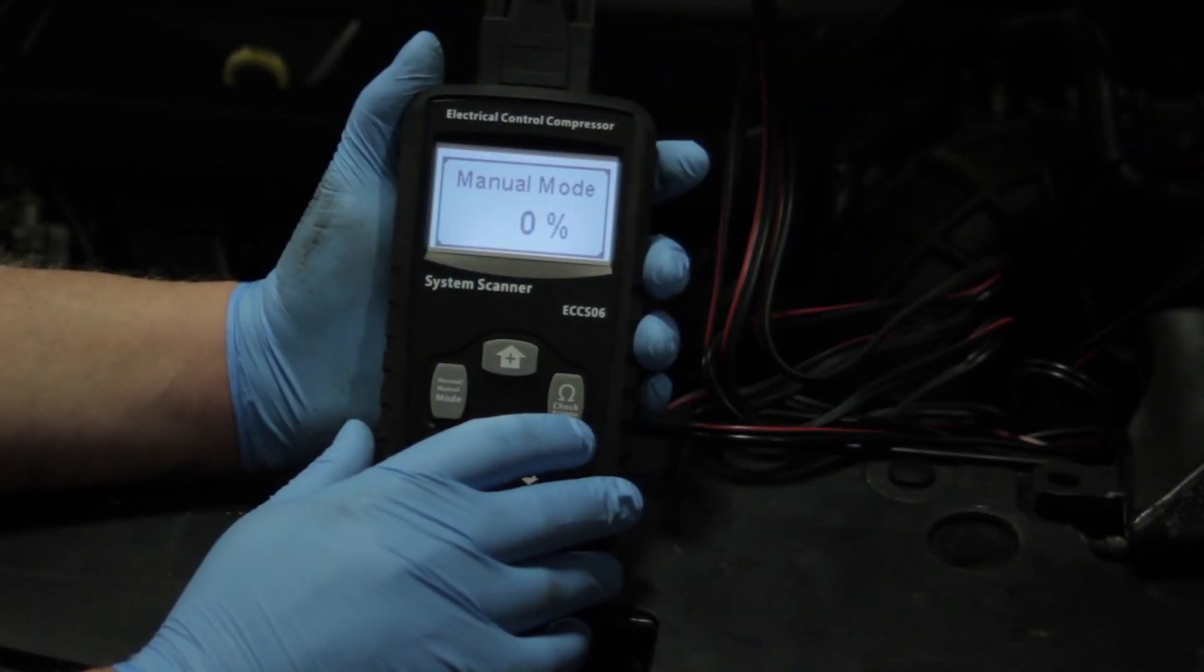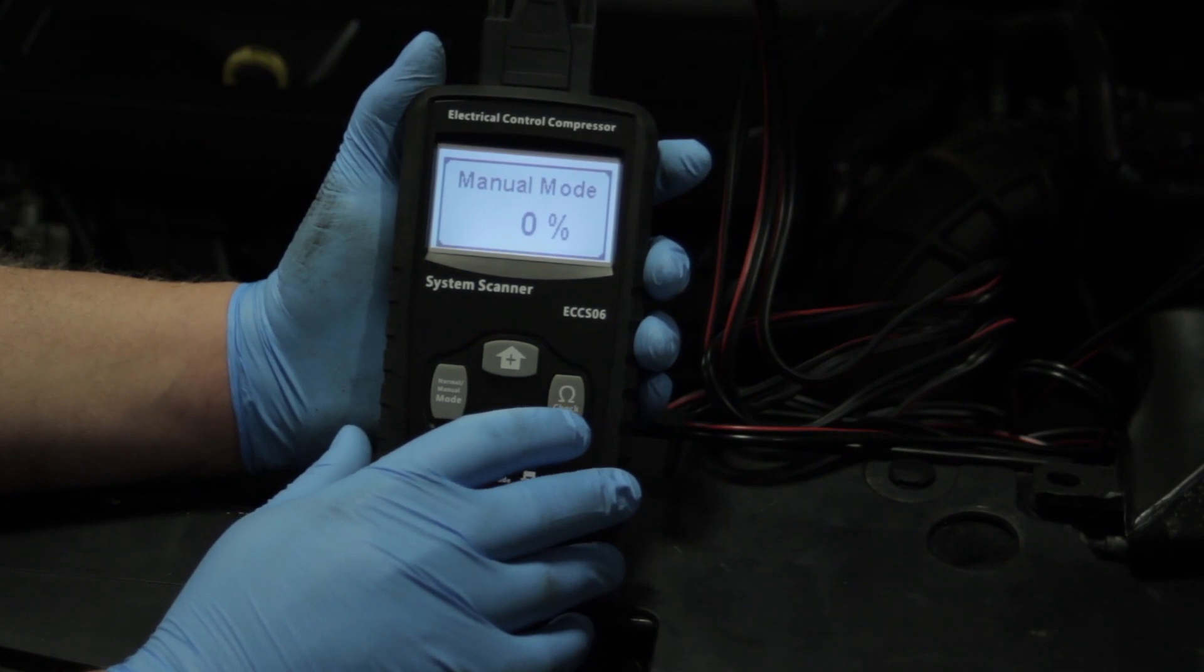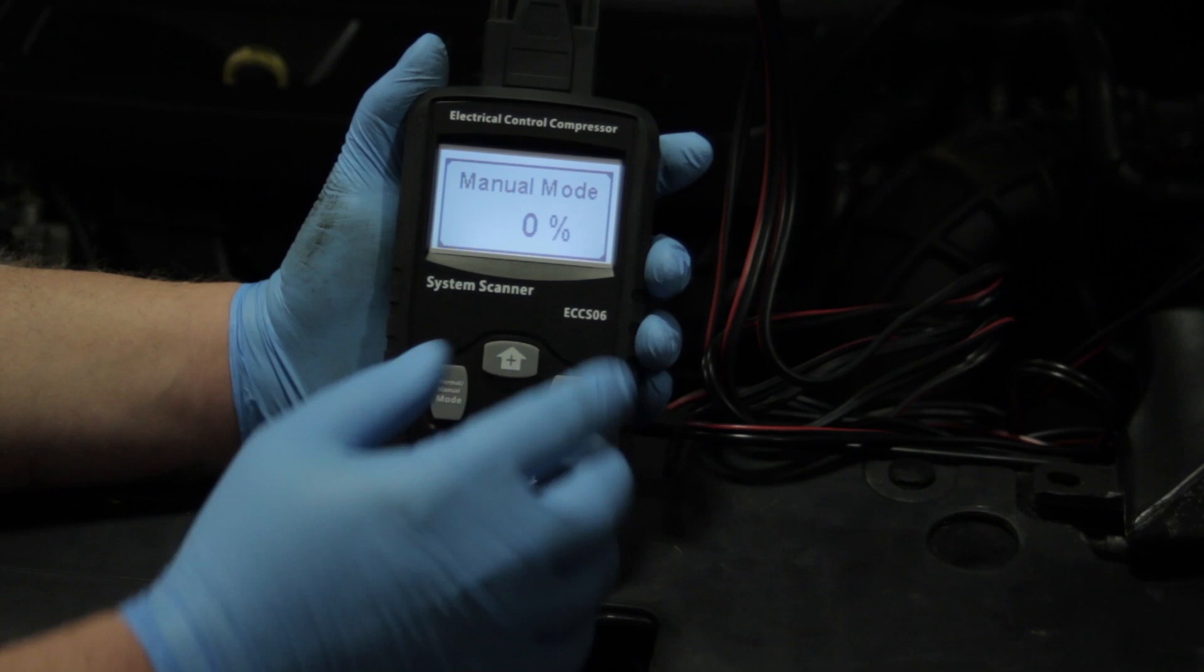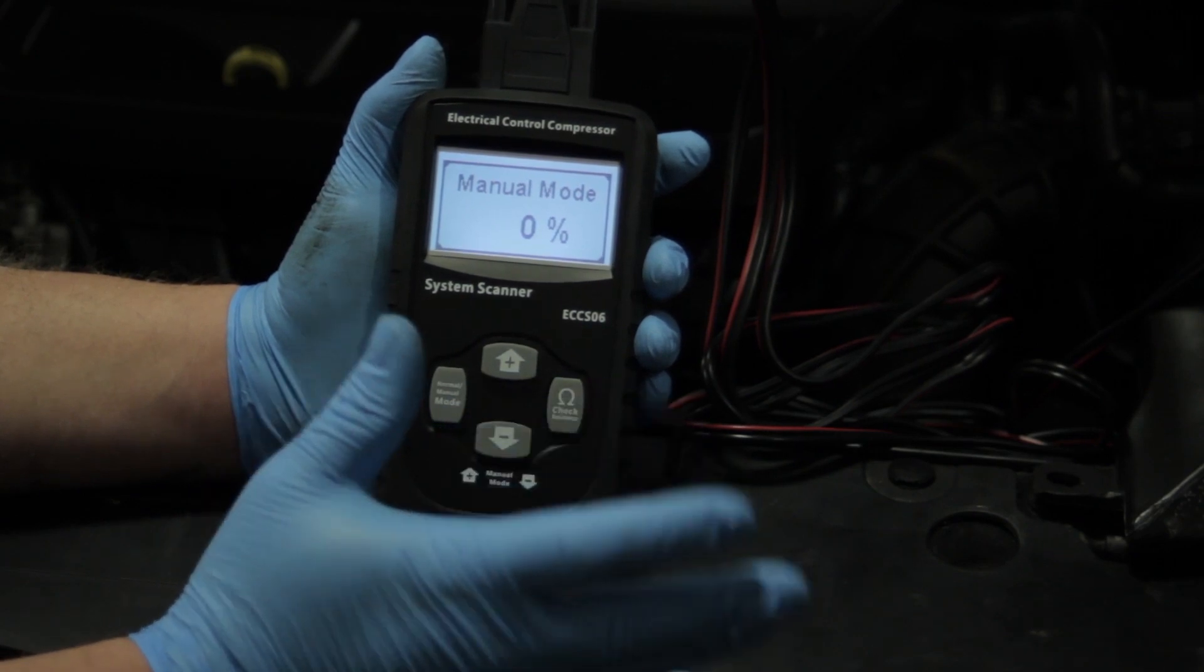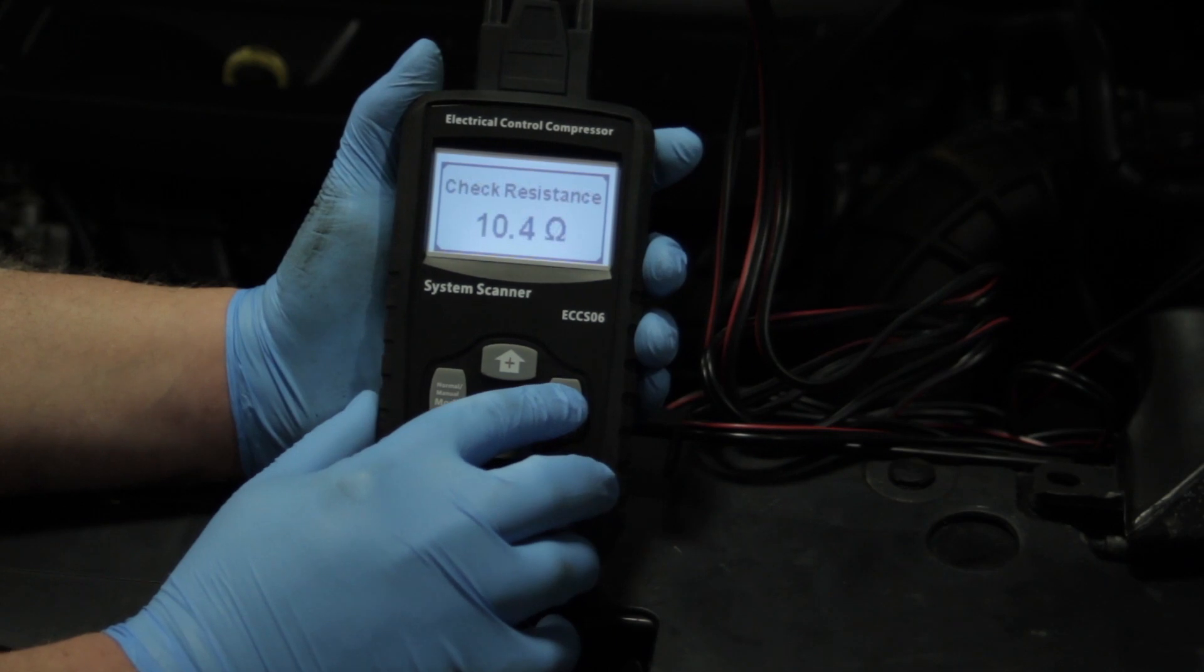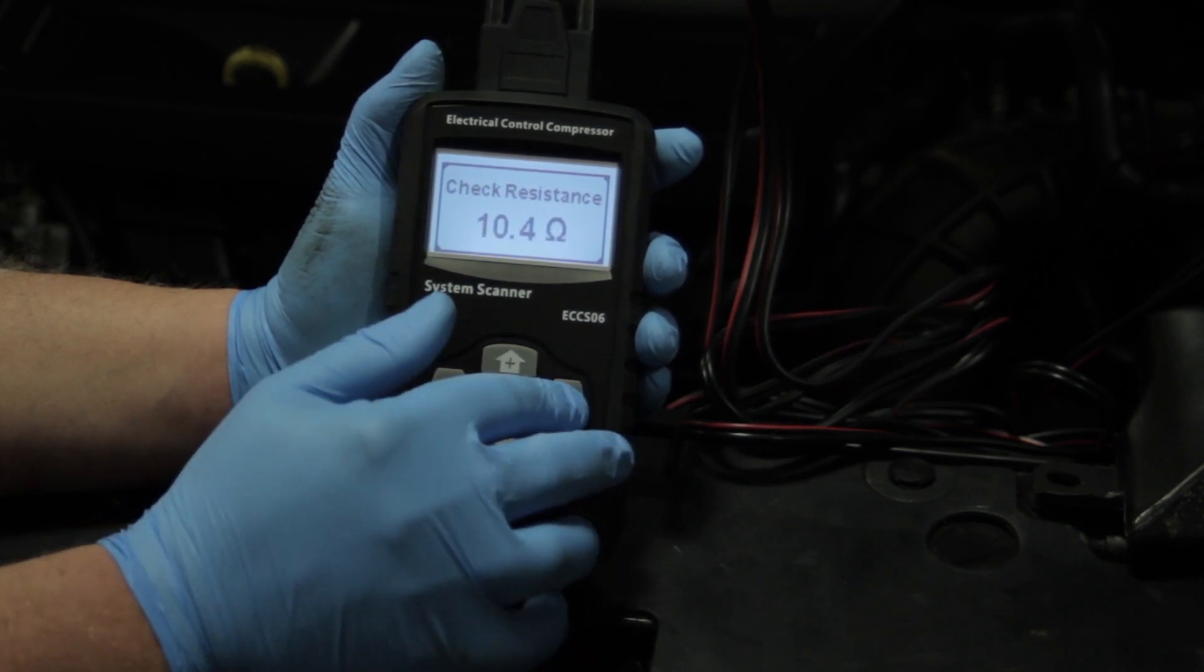Now that we've got our connections made to the compressor and to the vehicle itself, we're going to do a resistance check here. I haven't turned the key on or anything like that, I'm just going to hit the check resistance button here. And you'll see the resistance of the solenoid is 10.4 ohms, now that's well within range.